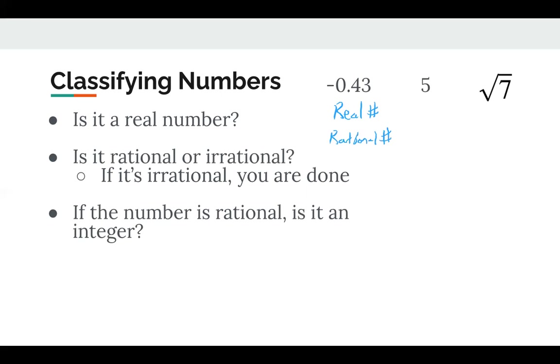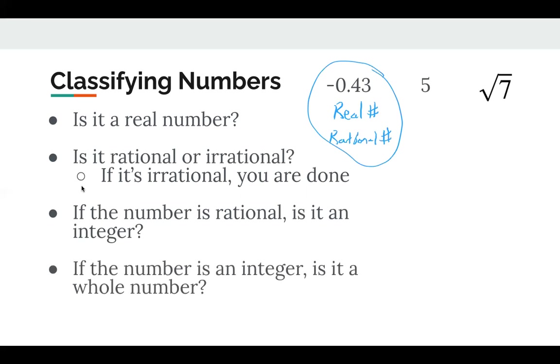We have categorized this number. It is a real number and it is a rational number. But if it were an integer, then the last question is, is it a whole number? So let's go through and look at a different example with five. Is five a real number? Yes, it is a location on the number line. So it is a real number. Is it rational or irrational? Meaning, could you write it as a fraction? Well, yeah, you could write five as a fraction, five over one or 10 over two or 15 over three. Okay. So it's rational.